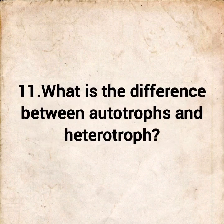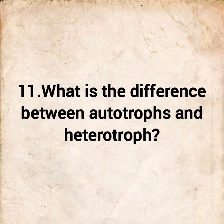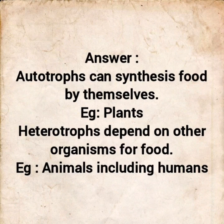Question 11: What is the difference between autotrophs and heterotrophs? Answer: Autotrophs can synthesize food by themselves. Example: Plants. Heterotrophs depend on other organisms for food. Example: Animals, including humans.